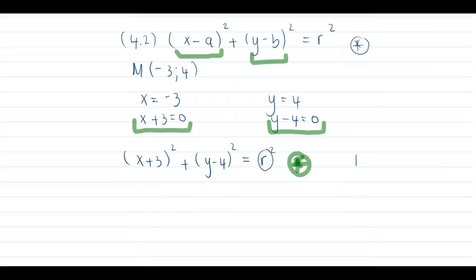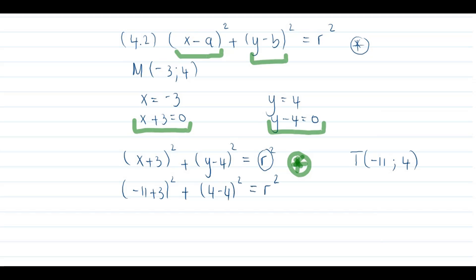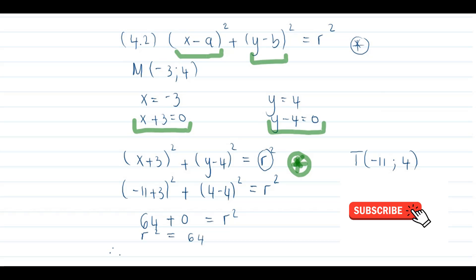Now that we have point T as (−11, 4), we substitute into our equation: (−11 + 3)² + (4 − 4)² = r². This gives (−8)² + (0)² = r², so 64 + 0 = r², therefore r² = 64. The equation of our big circle is (x + 3)² + (y − 4)² = 64.